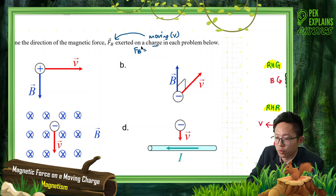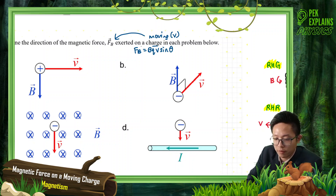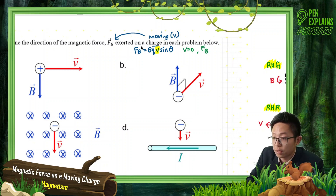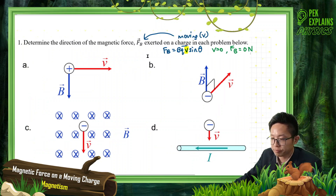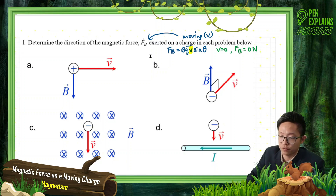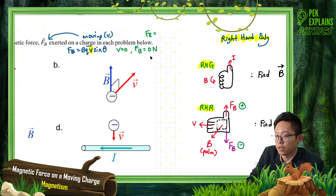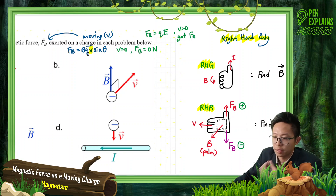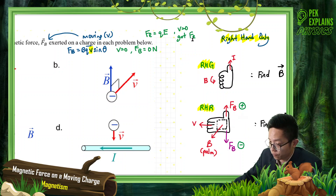Looking at the formula, FB equals BQV sine theta. You can see it must have velocity — if velocity is zero, the magnetic force will be zero. For electric force, it's only QE, so even if velocity is zero, there's still an electric force. But for magnetic force, a stationary charge experiences nothing.